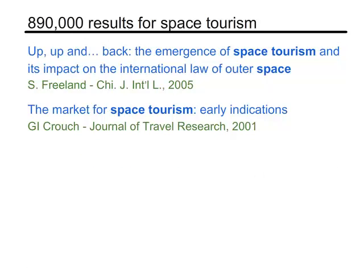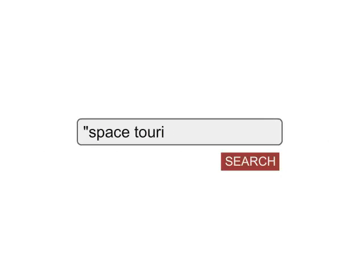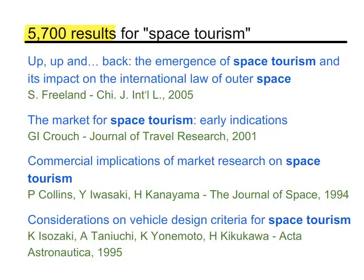With a feature called phrase searching. By putting quotation marks around the phrase you want to search, you're asking the database to search for that exact phrase as you have typed it. Searching for space tourism again, this time with quotation marks, you get only 5,700 results — a lot fewer than your first search.